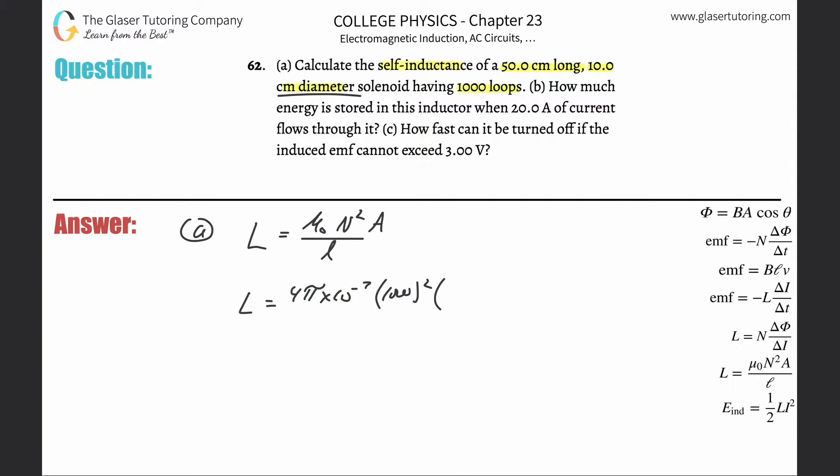Now they told us the diameter of the solenoid, but area is πr². We need to take π, multiply it by half of the diameter because that's what the radius is, 5. But then we need that in meters, so multiply it by 10 to the minus 2. The length they told us is 50 centimeters, so we need that in meters: 50 times 10 to the minus 2.